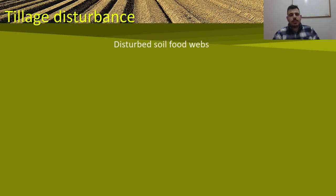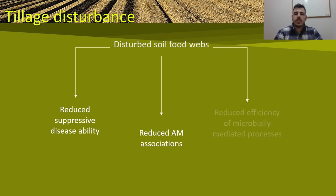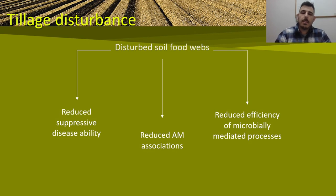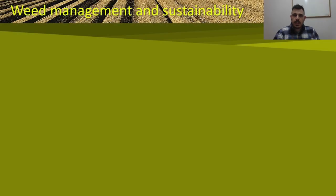The disruption of complex food webs in soils can contribute to reduced disease-suppressive ability, loss of arbuscular mycorrhizal associations, and reduced efficiency of microbially-mediated processes such as nutrient recycling, degradation of toxic residues, maintenance of soil structure and aggregation. This conclusion leads us to the next chapter: weed management and sustainability.